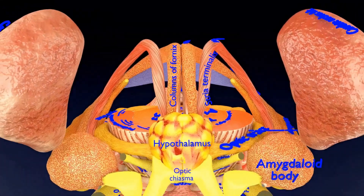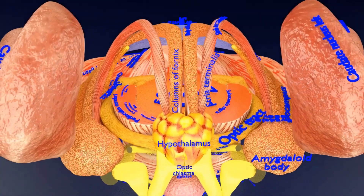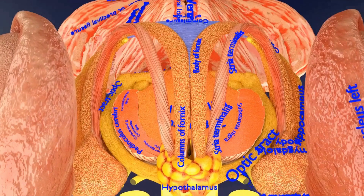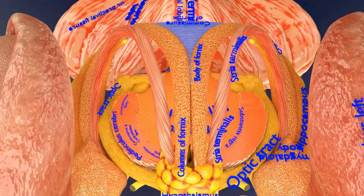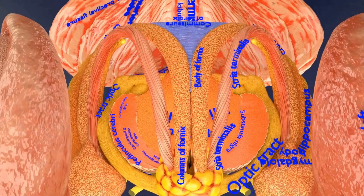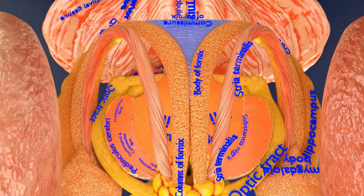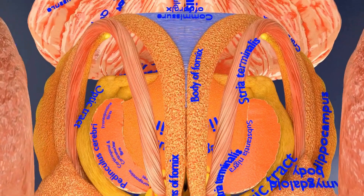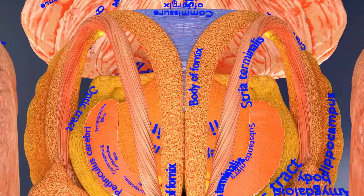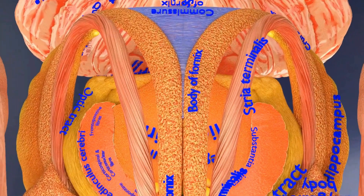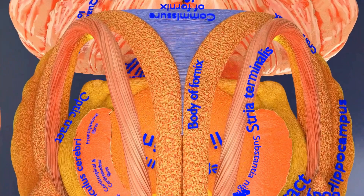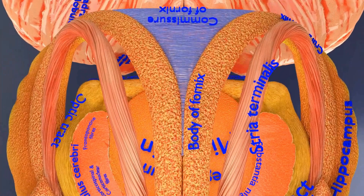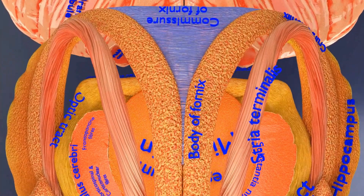Focusing now on the fornix — the word meaning 'arch' in Latin — it is a C-shaped bundle of nerve fibers in the brain that acts as the major output tract of the hippocampus. The fornix is part of the limbic system. The fibers begin in the hippocampus on each side and end in the mammillary body. You now see the body of the fornix.